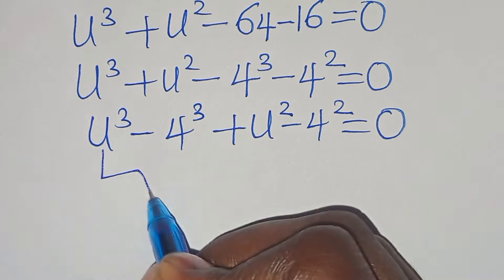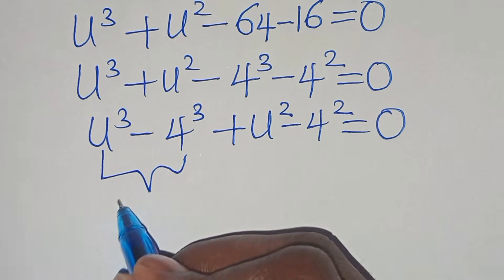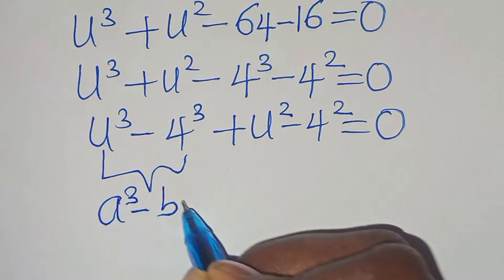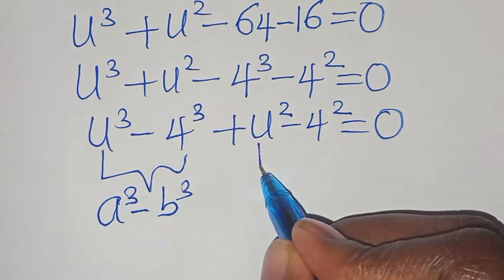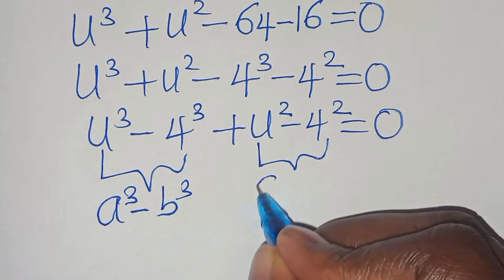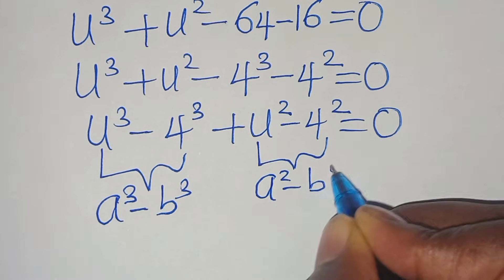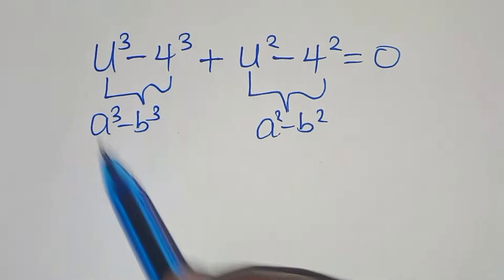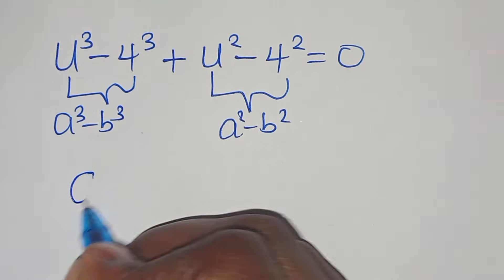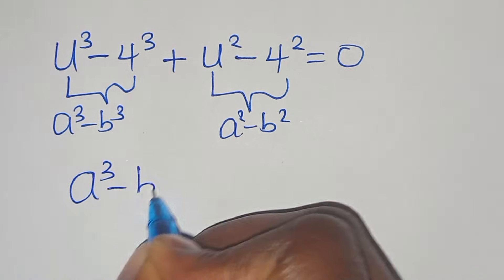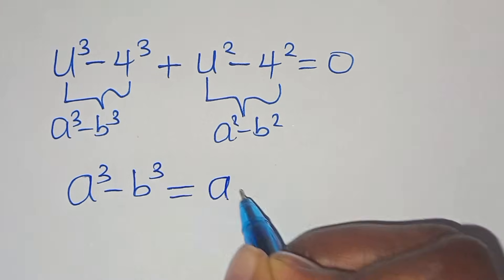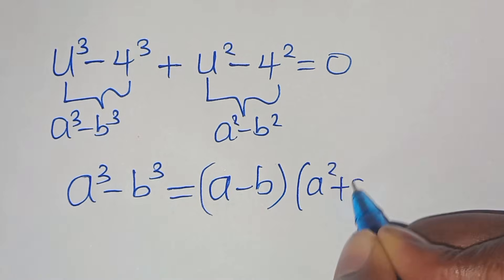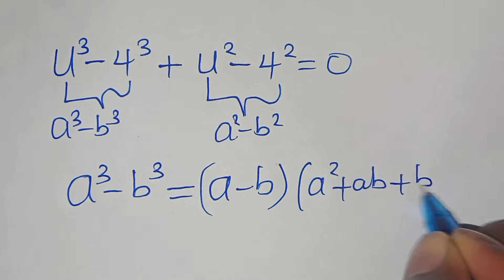We now have two parts. The first part is the difference of two cubes, expressed as a³ minus b³. The second part is the difference of two squares, expressed as a² minus b². The difference of two cubes factors as a minus b, times a² plus ab plus b².